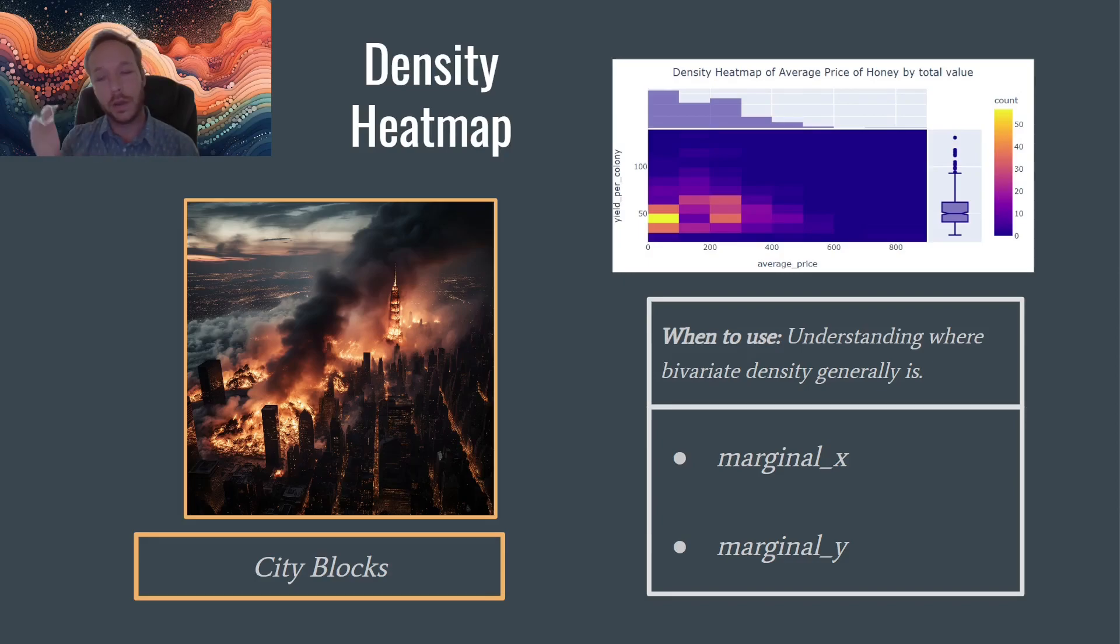A cool feature about this heat map is it allows us to add either a histogram or a box plot to the margins. It gives a little bit of extra detail, really highlighting where the city is on fire, but really highlighting where the heat, where the activity is in our data, where the action is going on. There's no reason that we couldn't put a correlation matrix into this.